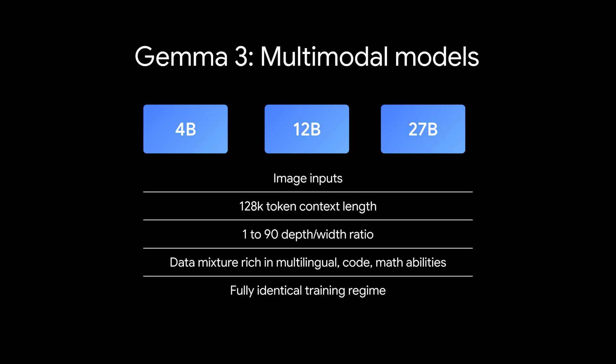What's really exciting is that the larger Gemma 3 models are multimodal. This means they don't just understand text — they understand images too. They can also handle multiple languages and process a huge amount of information at once, up to 128,000 tokens, which is like hundreds of pages of text.